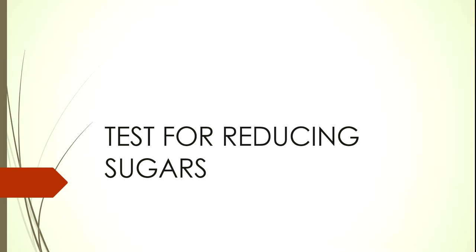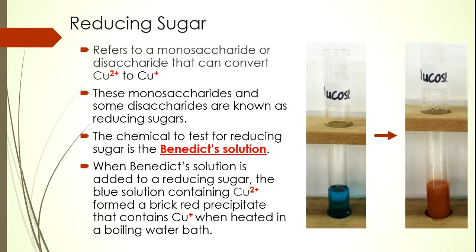Moving on, we will look at the test for reducing sugars. What is a reducing sugar? A reducing sugar generally refers to a monosaccharide or disaccharide that can convert copper 2+ to copper+. Copper 2+ at the start is blue in colour. When a reducing sugar is added to it and the mixture is heated in a boiling water bath, it will form Cu+, which is a brick-red precipitate. Each time you see the colour change from blue to a brick-red precipitate, it tells you that a reducing sugar is present.